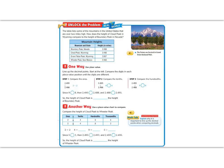Today's Unlock the Problem says, the table lists some of the mountains in the United States that are over 2 miles high. How does the height of Cloud Peak in Wyoming compare to the height of Boundary Peak in Nevada?